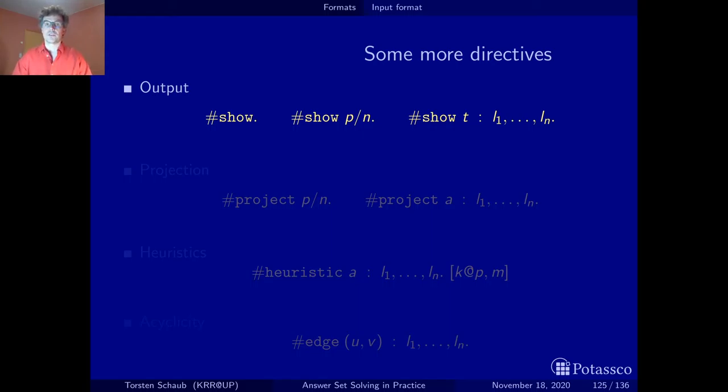One handy thing is the show statement, which controls the output. Often you may have several predicates, but only one or two make up a solution or are the ones you want to show in the end. A typical trick is to first suppress printing all predicates by writing #show dot. If you write this, nothing will be output, nothing will be shown at the end.